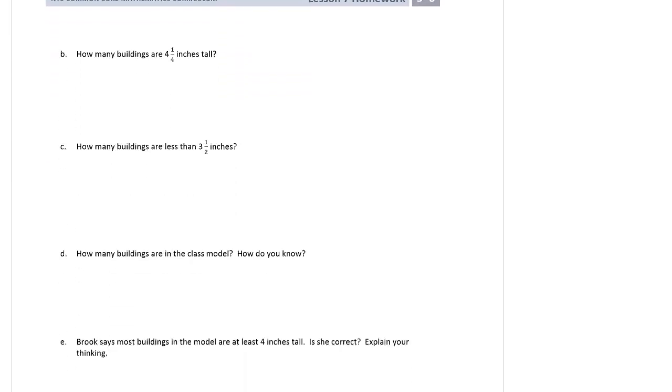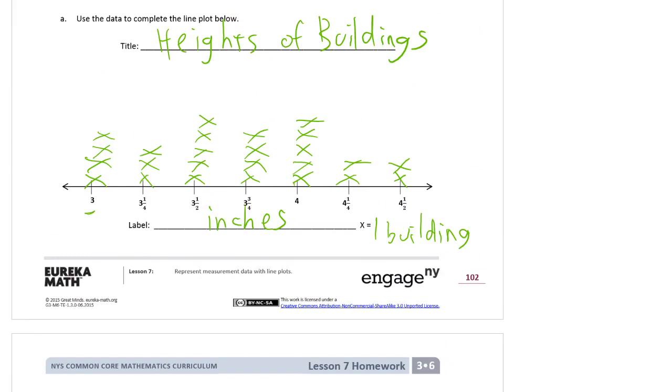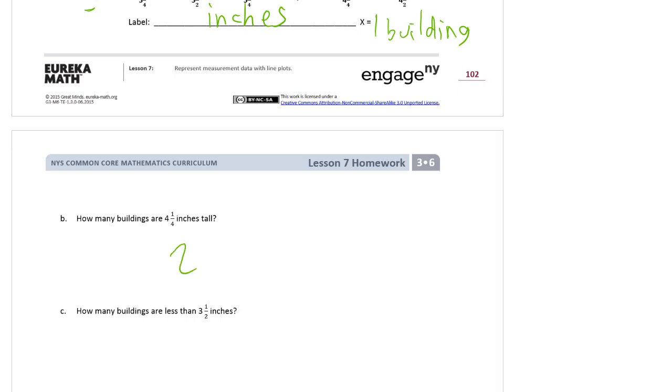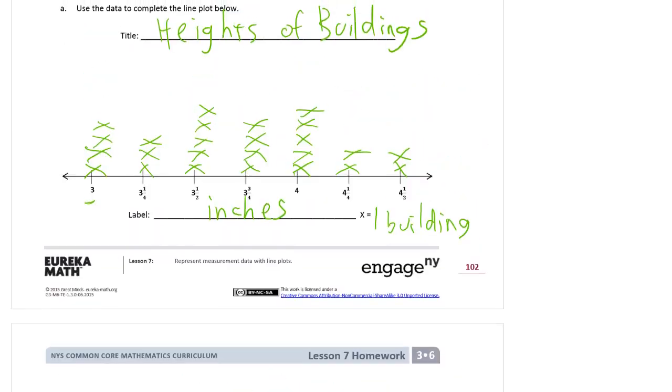How many buildings are four and one quarter inches tall? Well, now that everything has been sorted, we can just look at the line plot, and we can see that there are two x's under four and a quarter. How many buildings are less than three and a half inches? So you have to be less than three and a half to be in this club. We can't count three and a half, but everything on this side of three and a half we're going to count. And that is three and four, which is seven.